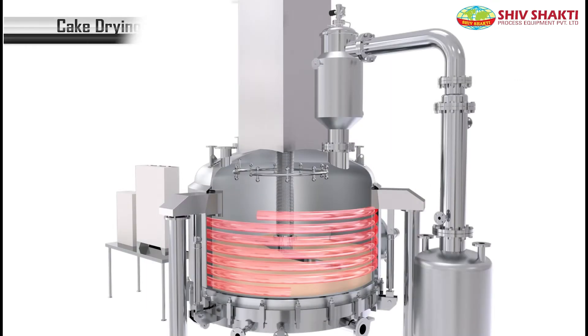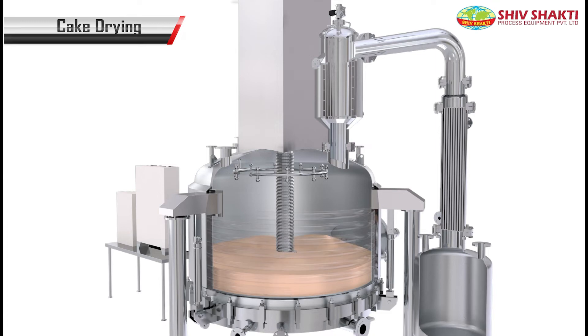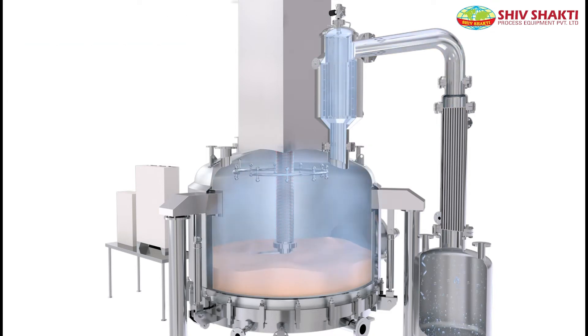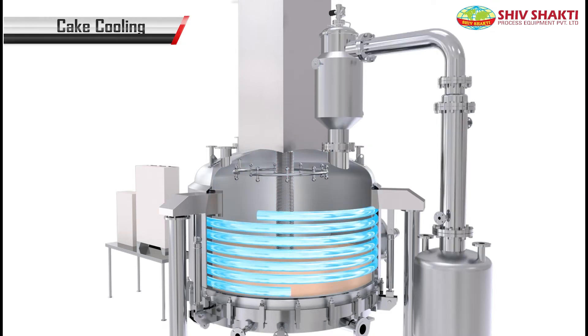In the drying process, to remove the moisture content from the cake, the heating of limpet coils, shaft, and blade takes place. In cooling, the powder is cooled after drying.